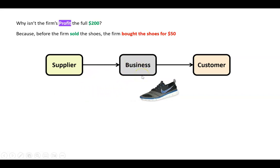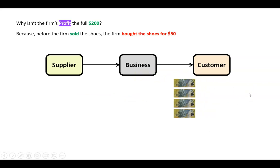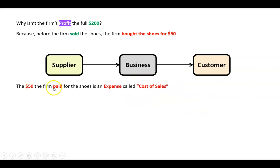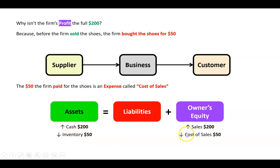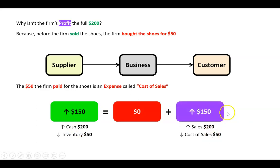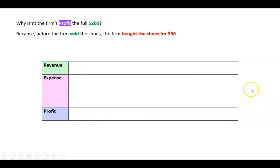The supplier gave us the shoes and we gave the supplier $50, then we sold them to the customer for $200. When I sell that inventory, it becomes an expense called cost of sales. So I got $200 cash - assets go up - and I have $200 of sales revenue, but I had to give up $50 of inventory, so the inventory asset goes down. That's the cost of sales expense, and expenses make owner's equity go down. Assets went up $200 but down $50, a net of up $150. Liabilities weren't affected and owner's equity went up $200 but down $50, also a net of $150. Both sides balance.